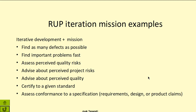There exist a number of testing frameworks and standards. As an example, the Rational Unified Process testing approach comprises iterative development together with a testing mission for each iteration. Different missions are possible — for example, find as many defects as possible, find important problems first and fast, assess perceived quality risks, certify to a given standard, and others. Depending on the mission, testing will have different goals, success criteria, and methods.